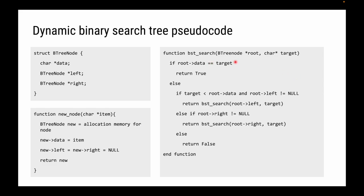When searching, we need the root and the target. If the root's data equals the target, we return true. If the target is less than the root's data and the root does have a left child, we recursively call search on the left child subtree. Otherwise, if the target is greater, we check if there's a right child — if so, we search that subtree; otherwise we return false because the item can't be found in the tree.